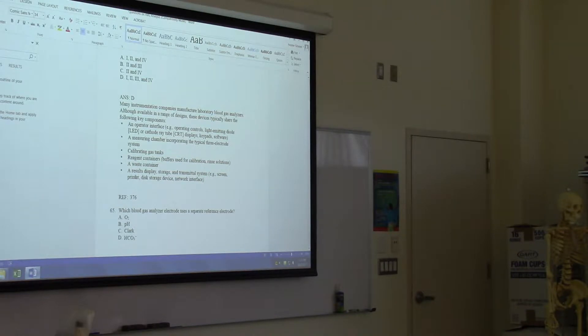Which blood gas analyzer electrode uses a separate reference electrode? O2, pH, or bicarbonate. One of them has two electrodes where it has a reference electrode and that actually measures. It's not CO2, it's pH.